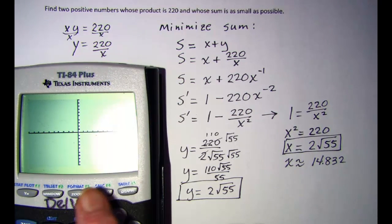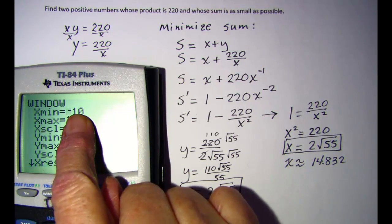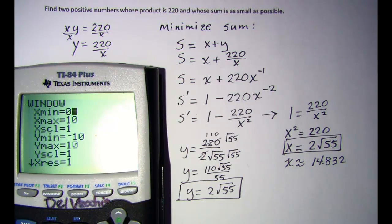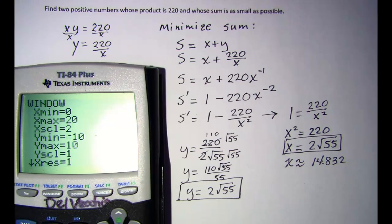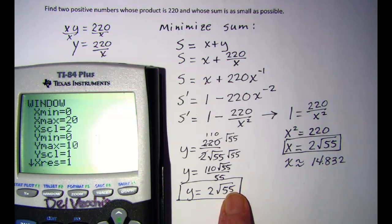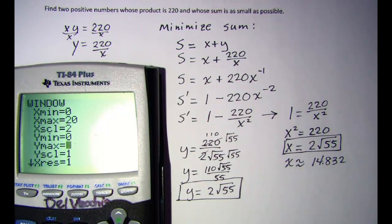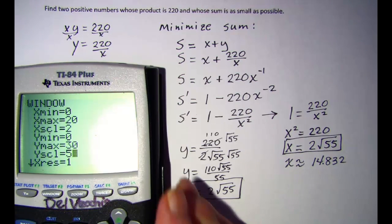I'm going to set my window. I won't have any negative x values or y values, so I'll use 0 as my minimum and then about 20 for the x maximum, going up by 2. There won't be any negative y values either, so I'll set that at 0. If x is about 15 and y is about 15, the sum we're looking at — let me set my y max at 30 and see if we can get a picture of this, with a scale of 5.